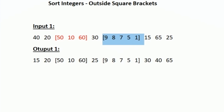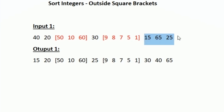Similarly, some other integers are also enclosed within square brackets. Our task is to sort the integers present outside the square brackets. We should not touch the values present inside the square brackets, and their positions should also remain the same. Keeping all these constraints, we have to sort all remaining integers outside the square brackets.